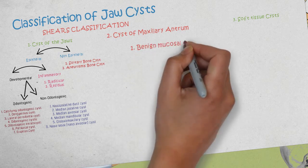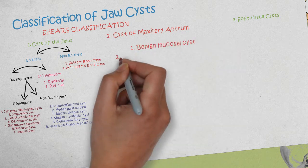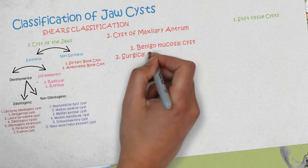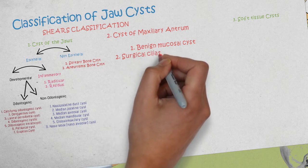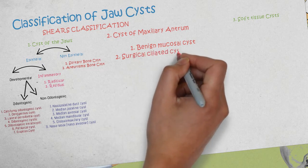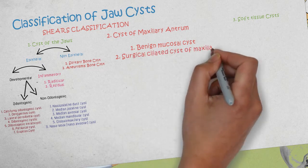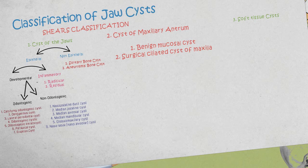The cysts associated with the maxillary antrum include the benign mucosal cyst and the surgical ciliated cyst of the maxilla.